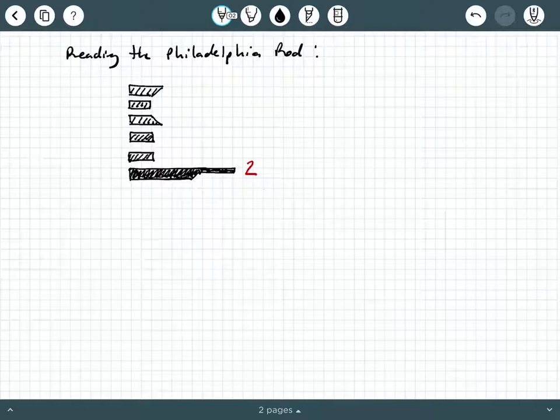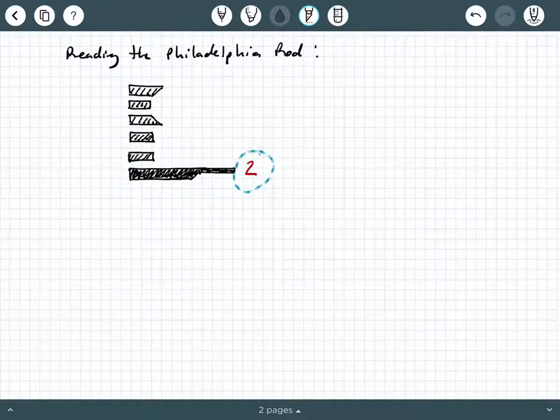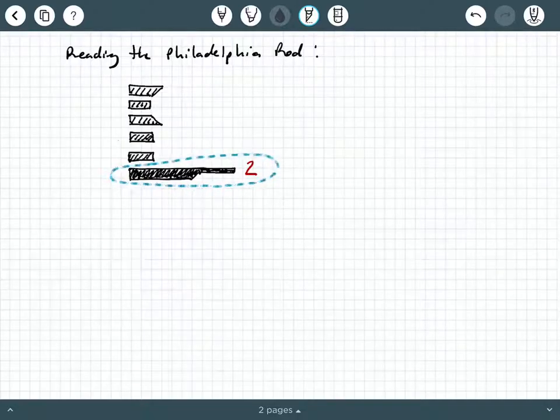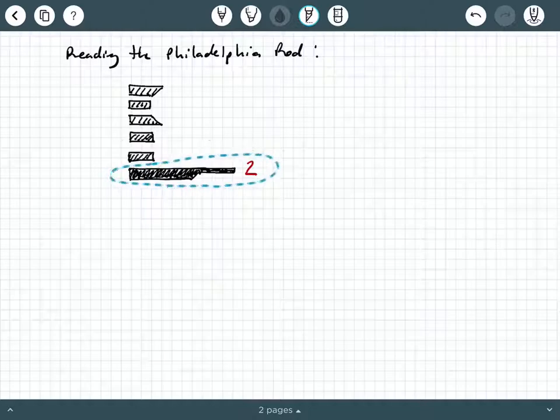Now, if you notice on the Philadelphia rod, you're always going to see this very odd looking shape associated with the big red numbers. And remember, the big red numbers indicate whole numbers in feet. So you're always going to see one of these weird trapezoidal shapes affiliated with a whole number that is in feet, and that's a red number.